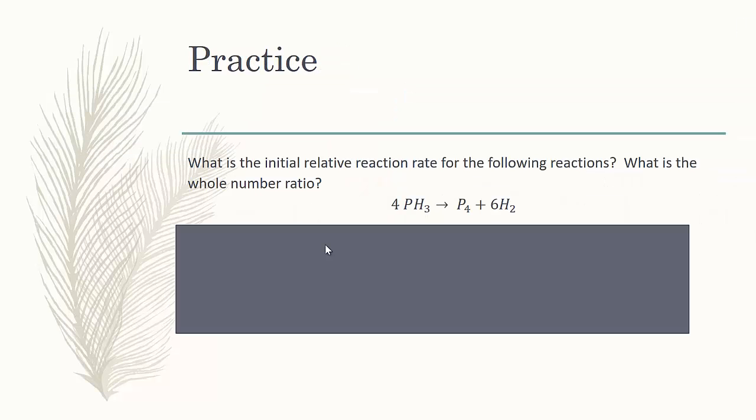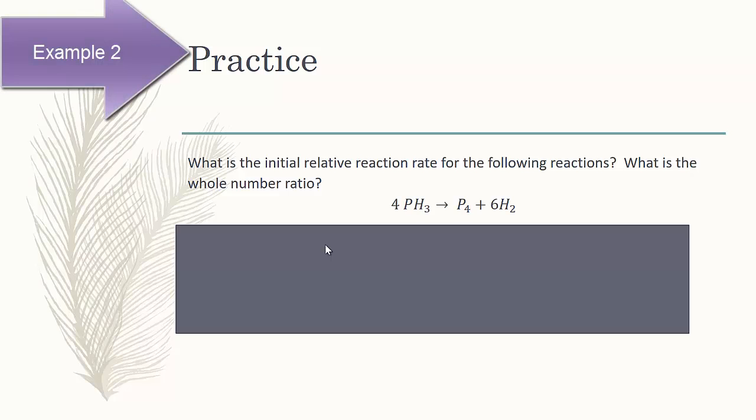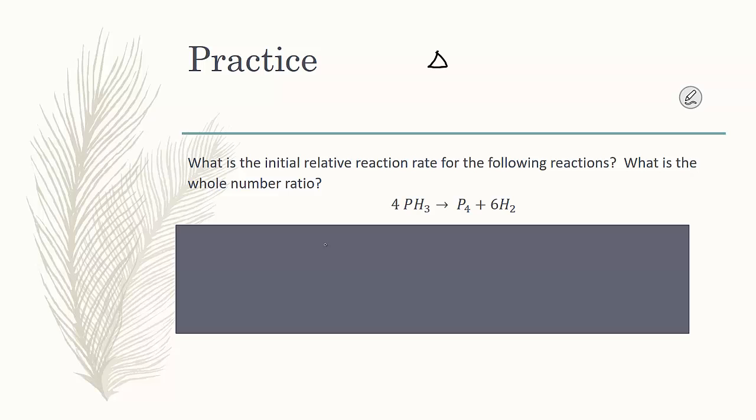So, let's practice this. Here is phosphorus trihydride forming phosphorus and hydrogen gas. What is the initial relative rate for each one? And then, express it as a whole number value. So, remember, rate law is always going to be a change in the concentration of something over a unit of time. Using this setup, why don't you pause the video and see if you can write the relative rate law, the initial rate.